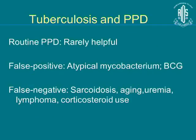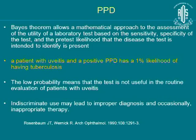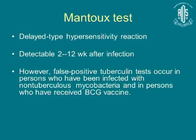Regarding the PPD: routine PPD is rarely helpful. There may be false positives with atypical mycobacterium and BCG, and false negatives in sarcoidosis and aging. An article from Archives of Ophthalmology (1990) stated that a patient with uveitis and a positive PPD has only a 1% likelihood of having tuberculosis. False positive tuberculin test results can occur in persons infected with non-tuberculous mycobacteria or who received the BCG vaccine.